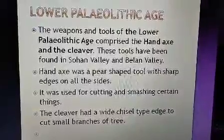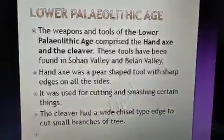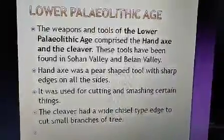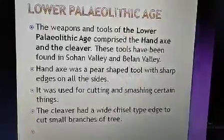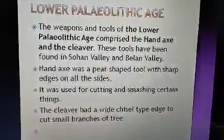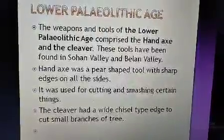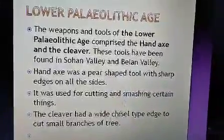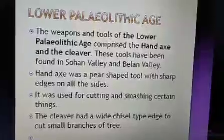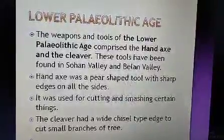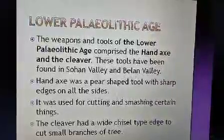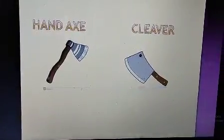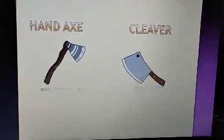In the lower paleolithic age, the most important tools used by early humans were the hand axe and the cleaver, mostly found in Sohan Valley and Balan Valley of India. The hand axe was a pear-shaped tool, and the cleaver was a wide chisel-type tool. These tools were used for cutting objects or smashing things.